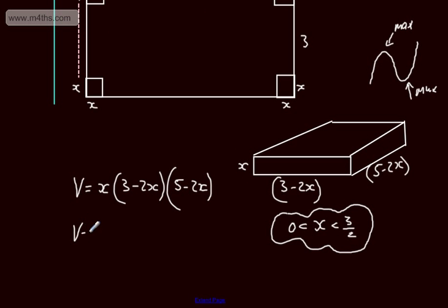So let's go ahead and just write this out. Let's expand the double brackets. That's 15, and then we're going to have minus 16X plus 4X squared. So V as a function of X gives me 4X cubed minus 16X squared plus 15X.